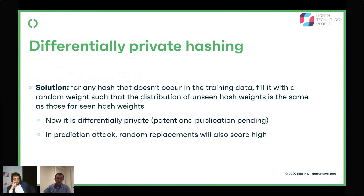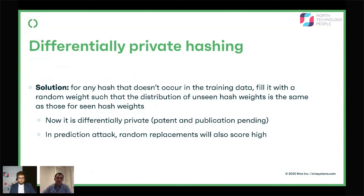So the solution is to take all of the hashes for things that were not in the dataset and make them look statistically indistinguishable from the things that are in the dataset — you fill them with random noise. This is actually a common tactic: all differential privacy solutions use this noising intuition to achieve what they achieve. Now it's differentially private. In the original prediction attack, random replacements of words will also score high, and we are safe.